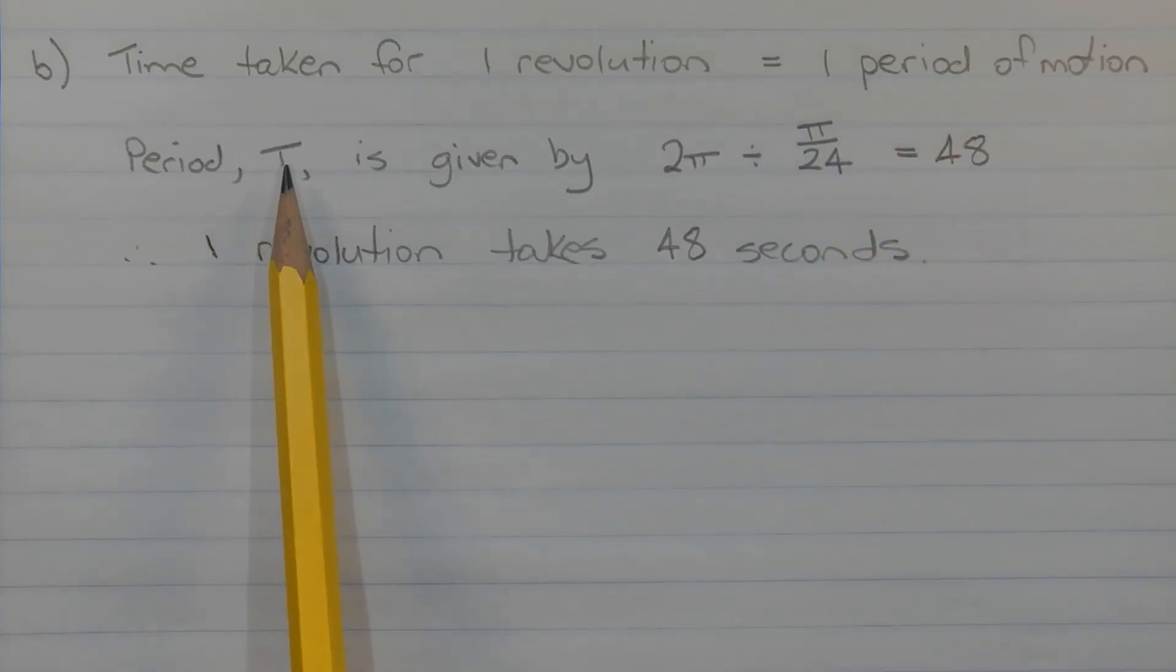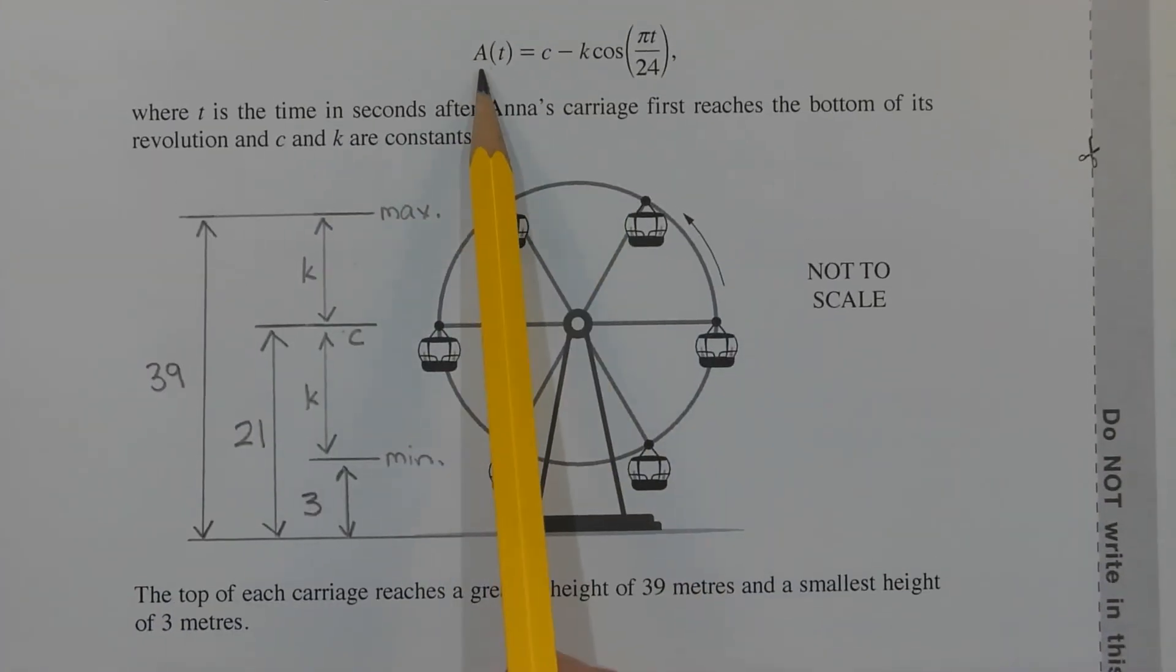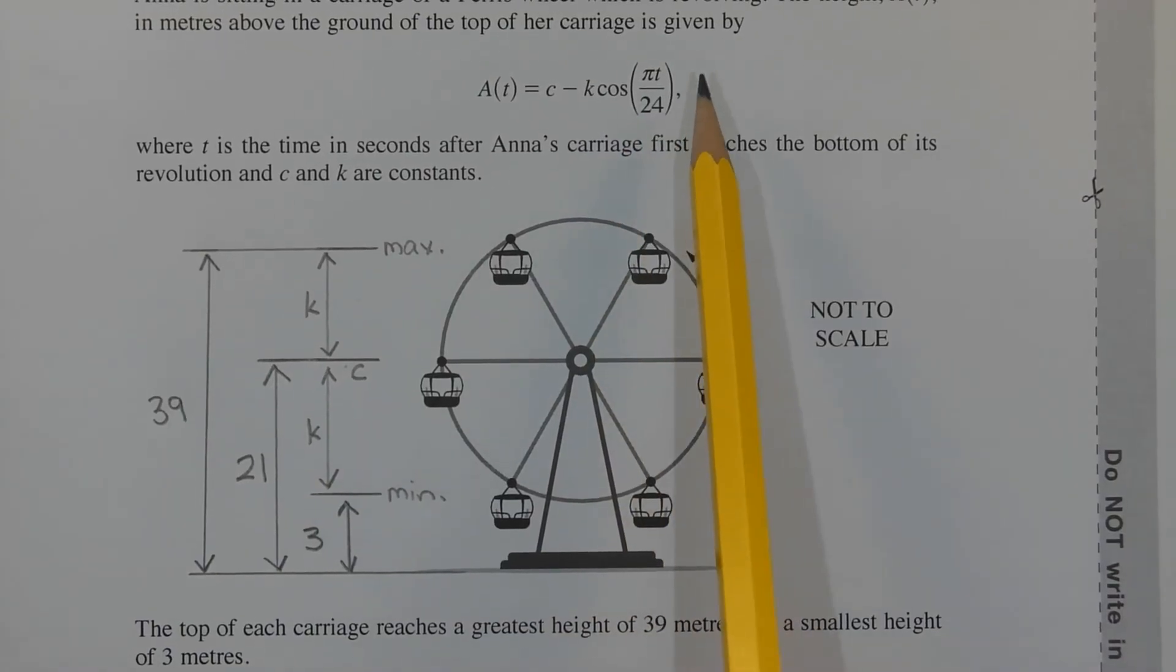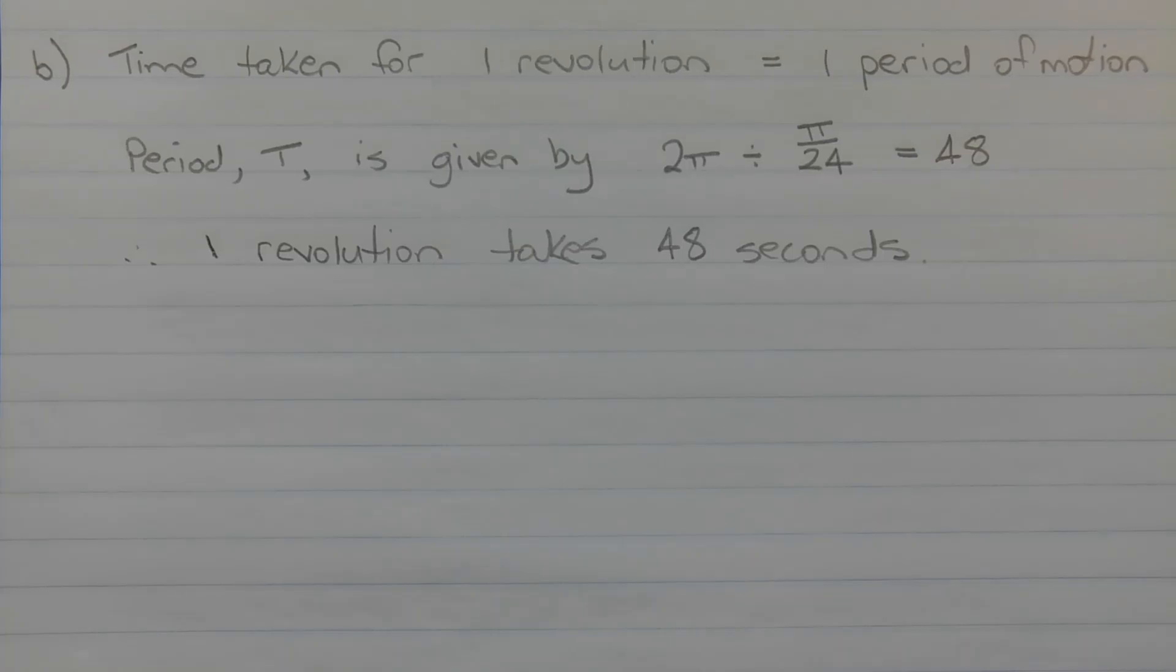Now the period capital T is given by 2π divided by the coefficient of the time variable t. So if you recall from the equation of A(t), we have A(t) equals c minus k times cos(πt/24). So the coefficient of t here is π/24. So to find the period we take 2π, we divide that by π/24. The two π's will cancel. We multiply the 2 and the 24 together and we get 48. Therefore one revolution takes 48 seconds.